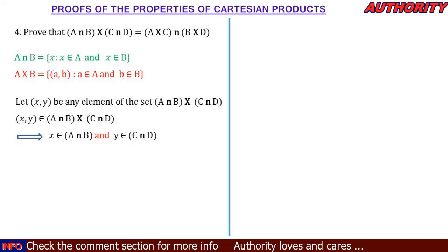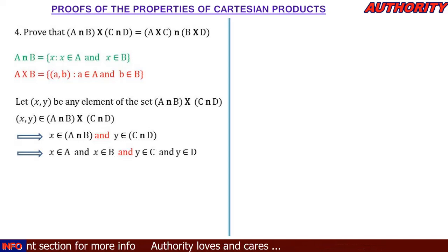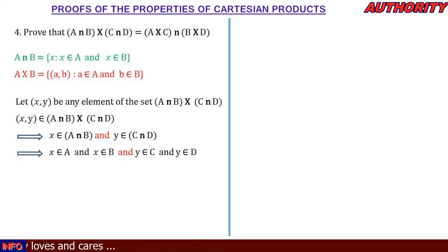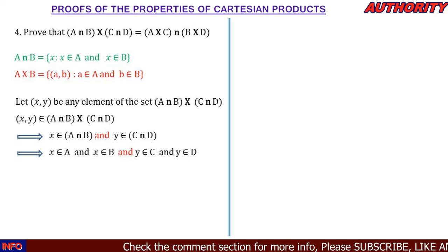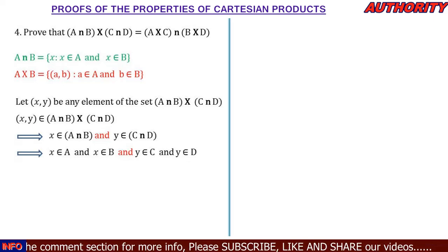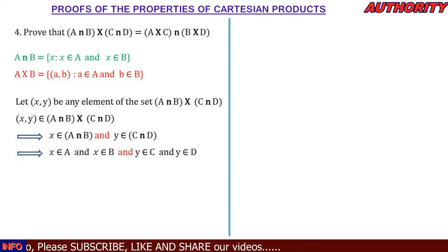Since x ∈ A ∩ B, it implies that x ∈ A and x ∈ B — that is what intersection means, an element that exists in both sets. And since y ∈ C ∩ D, it implies that y ∈ C and y ∈ D. That is intersection as well. So we have expanded fully: x ∈ A, x ∈ B, y ∈ C, and y ∈ D.